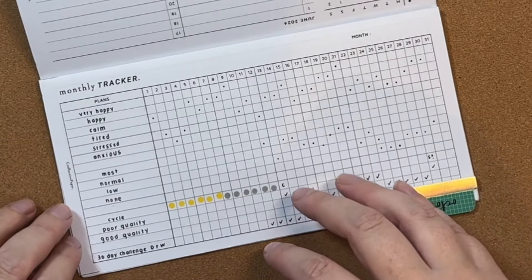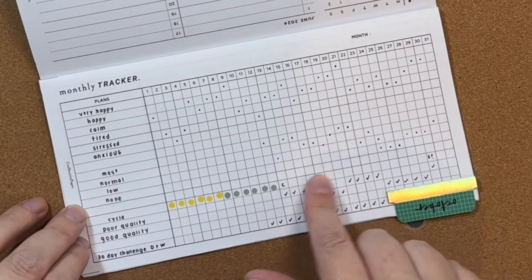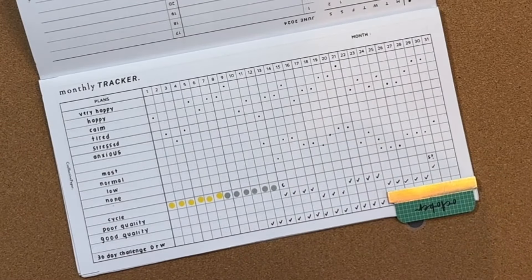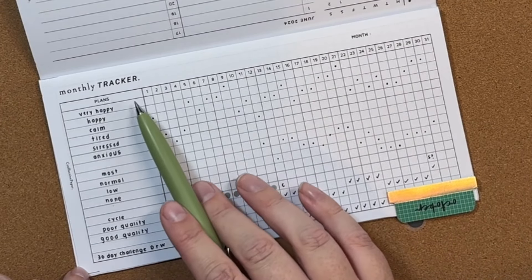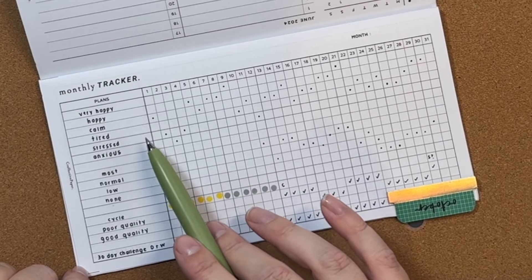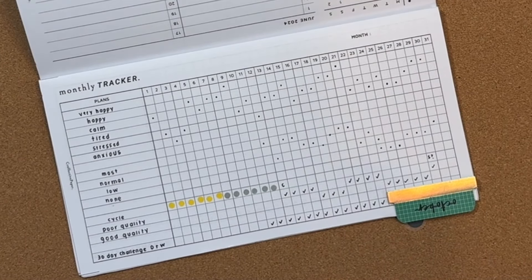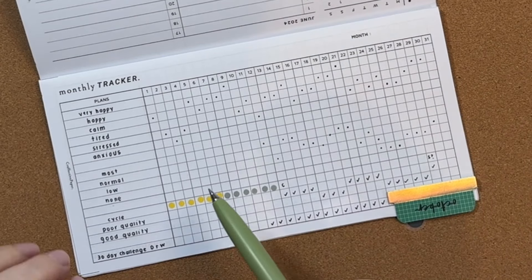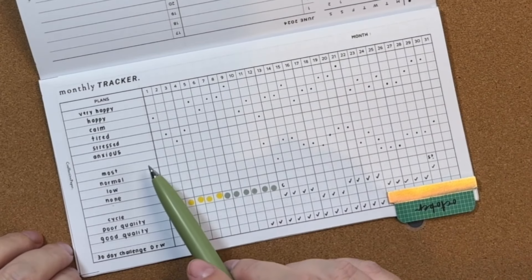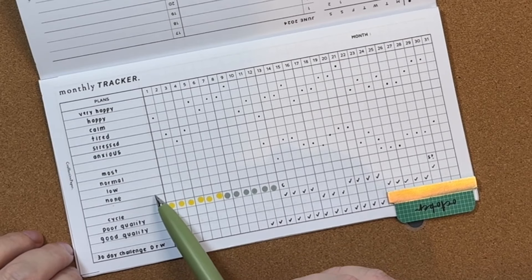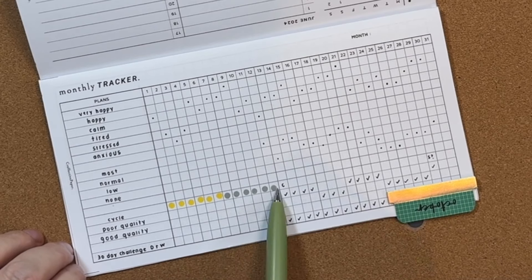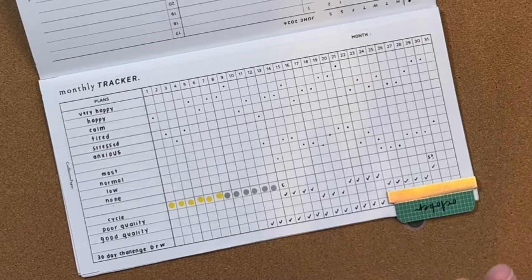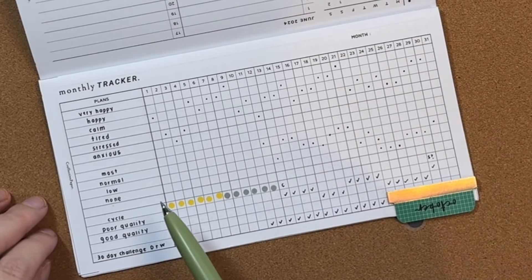But I thought that tracking my mood, energy, and my cycle all in one place, maybe I could see the correlation between those three things. So on the top here, I chose to do very happy, happy, calm, tired, stressed, or anxious. And then for my energy level, I have most, normal, low, or none. For my cycle, I started color coding the different phases of my cycle, but I just went off hormonal birth control, and let's see, really in September I think.